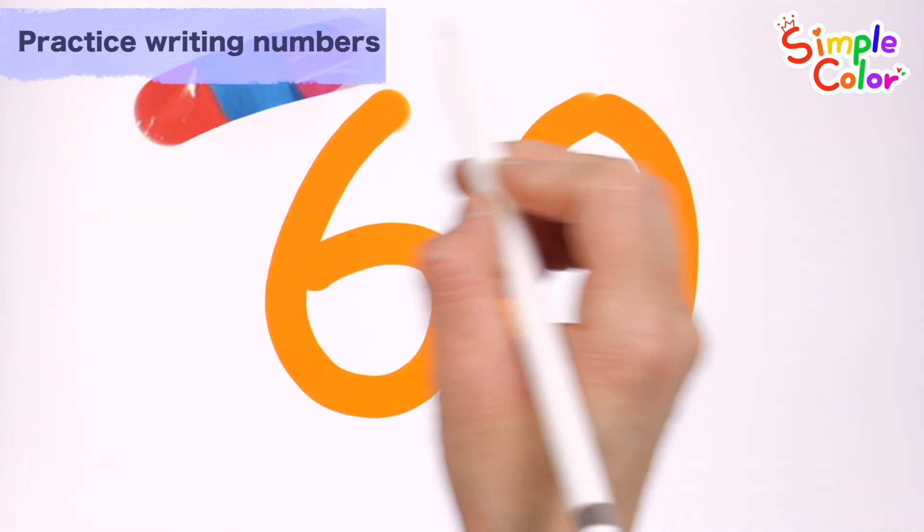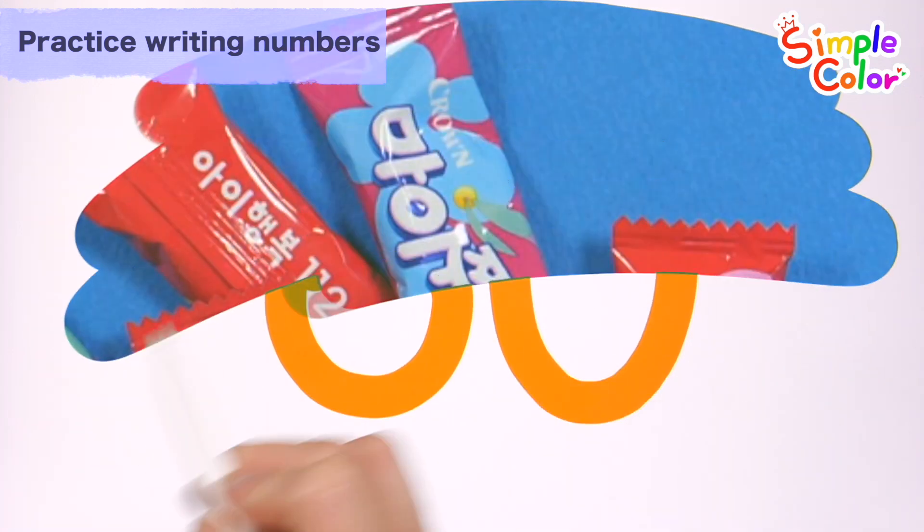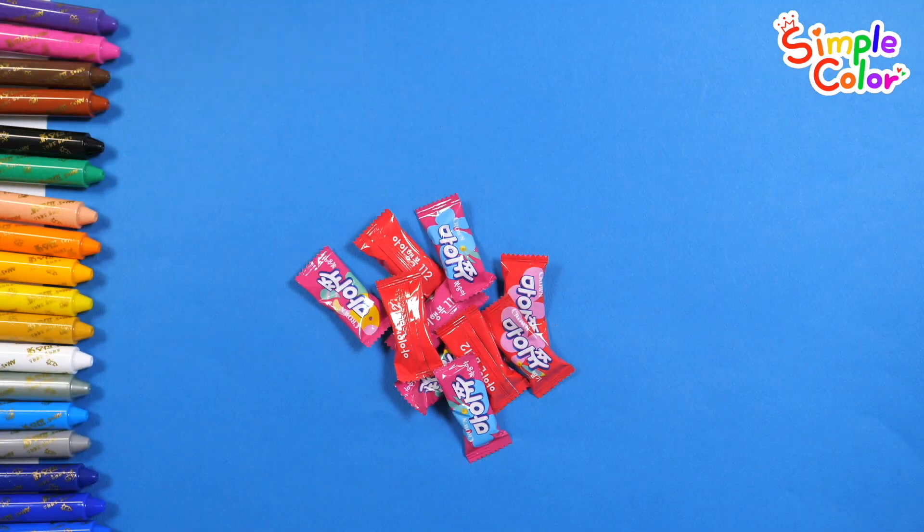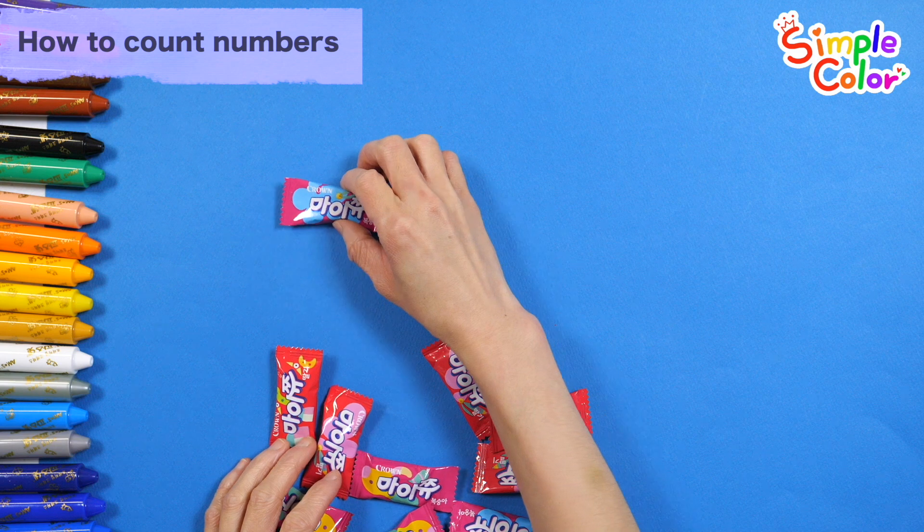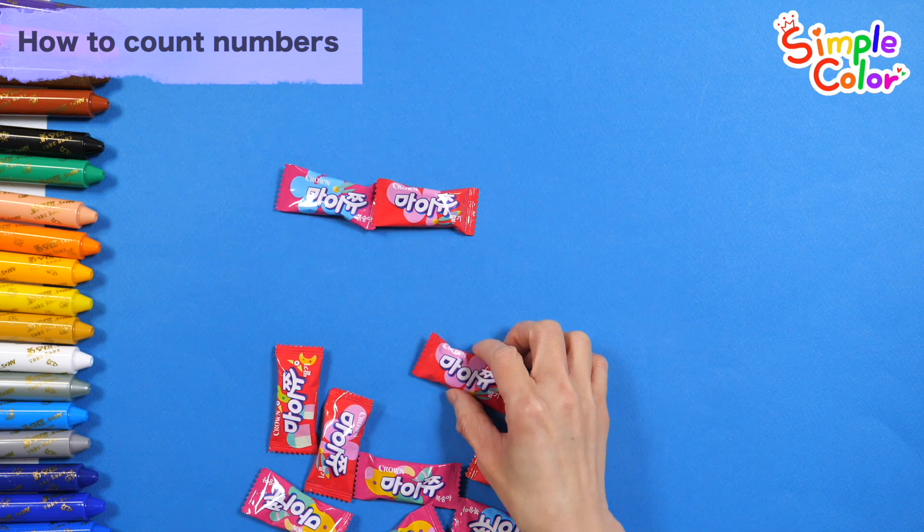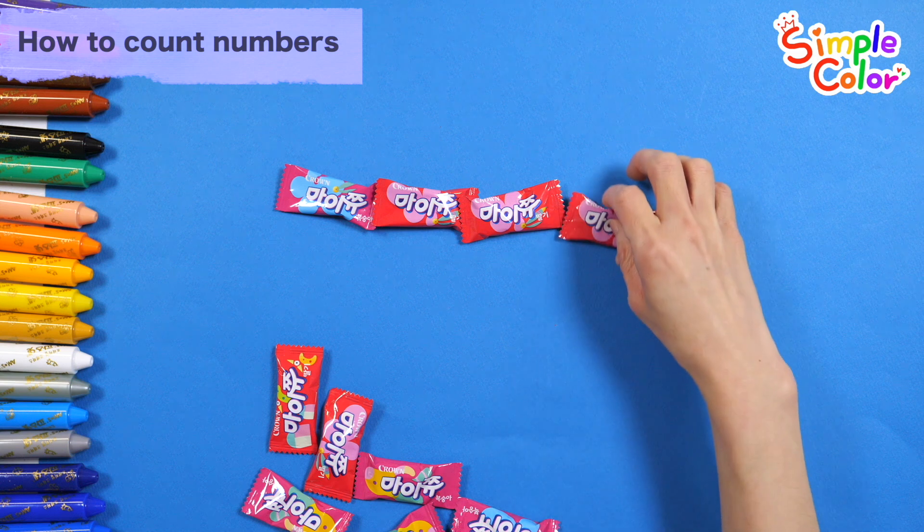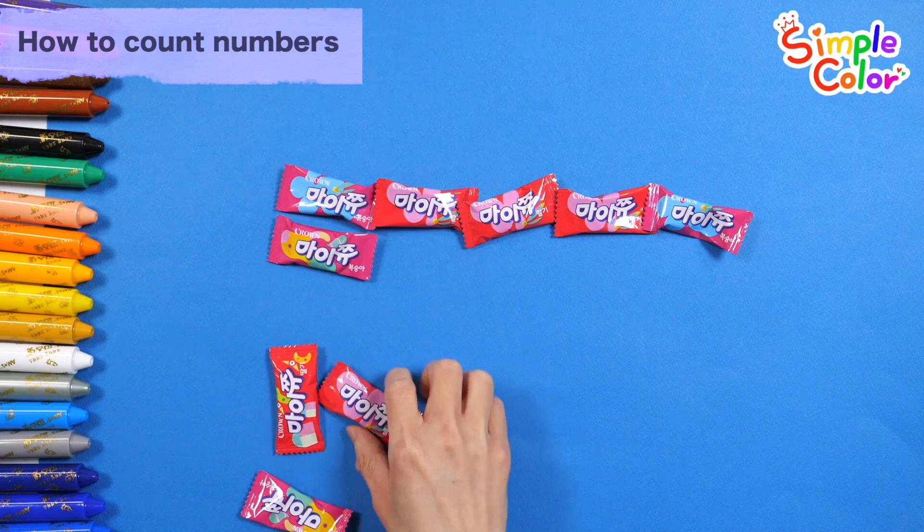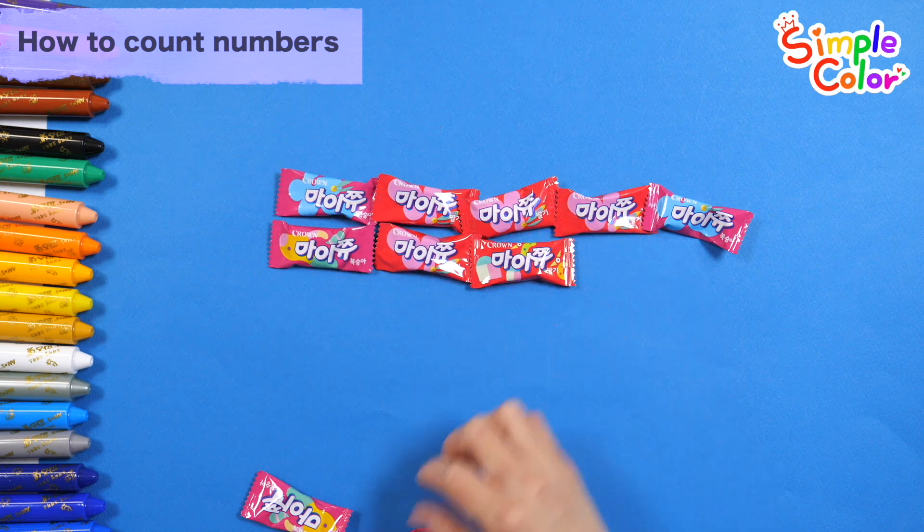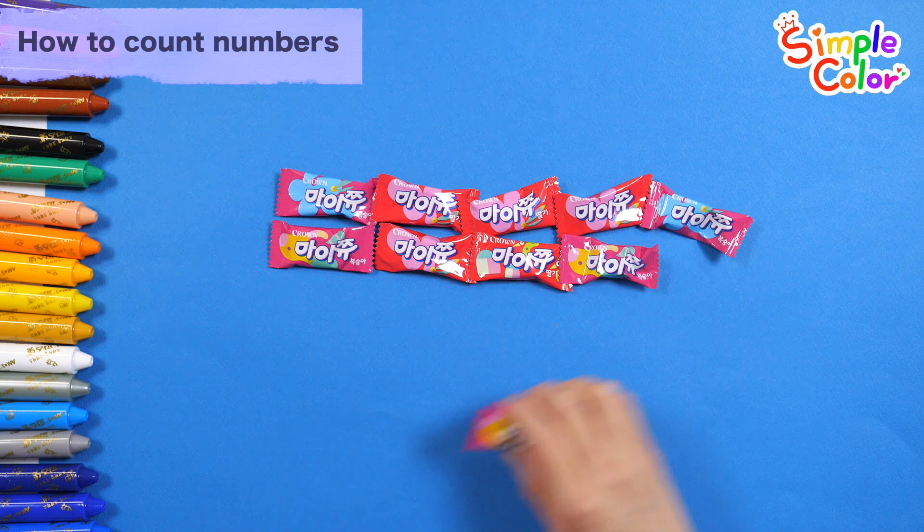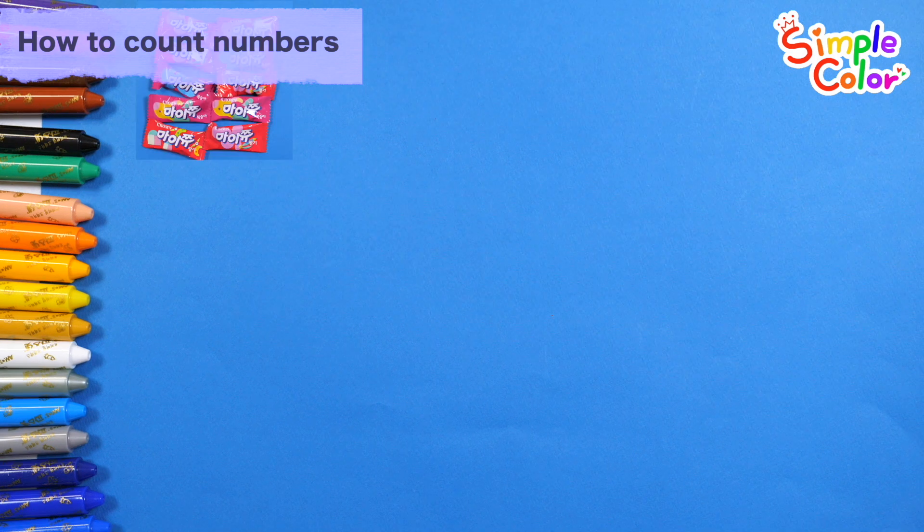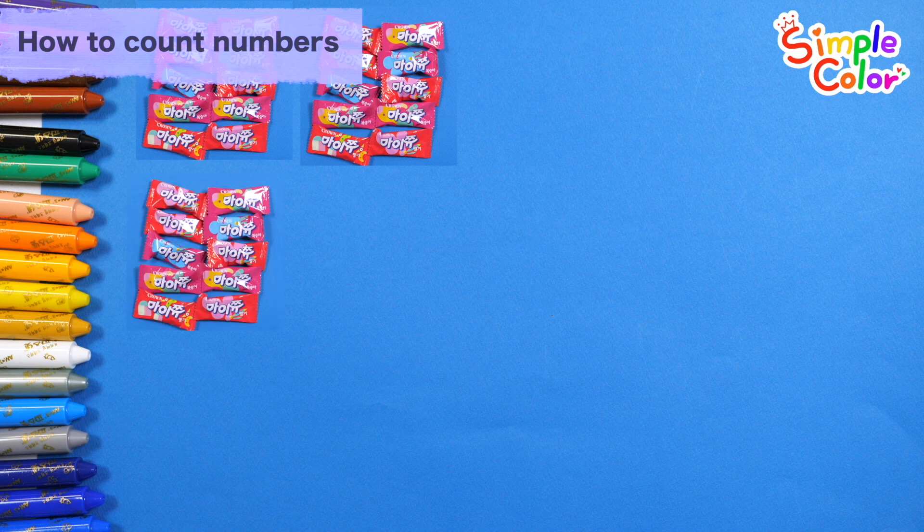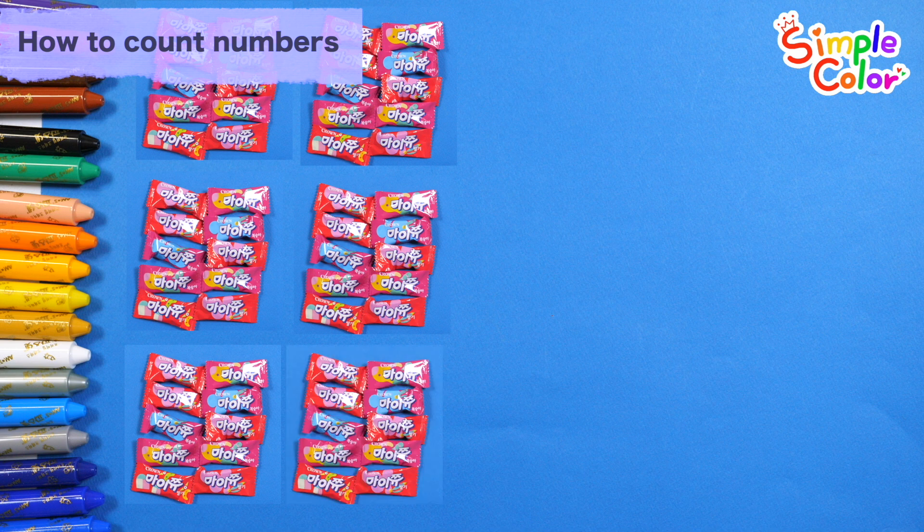Sixty. Learn how to count by counting candies one by one. One. Two. Three. Four. Five. Six. Seven. Eight. Nine. How many candies are there? Ten. Ten. Twenty. Thirty. Forty. Fifty. Sixty. There are sixty candies in total.